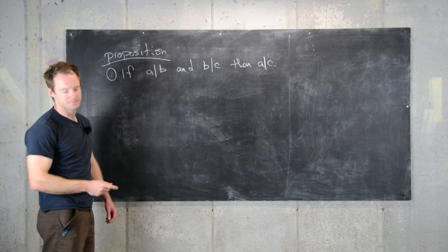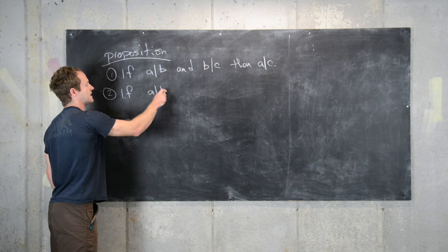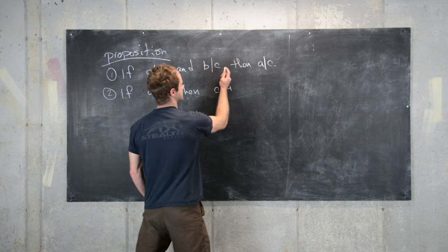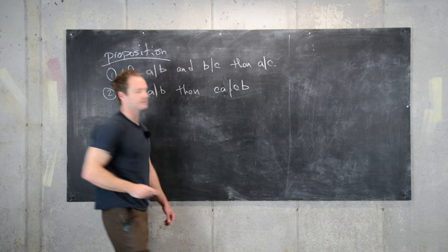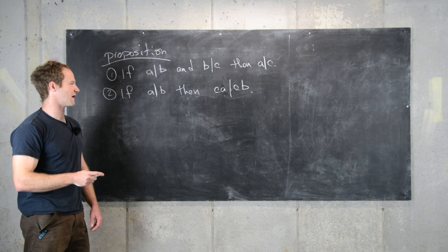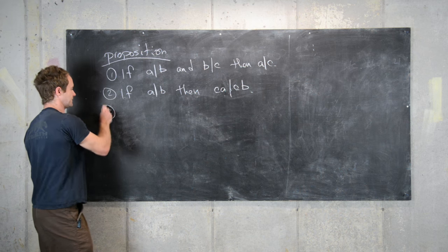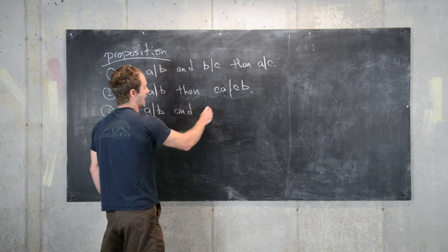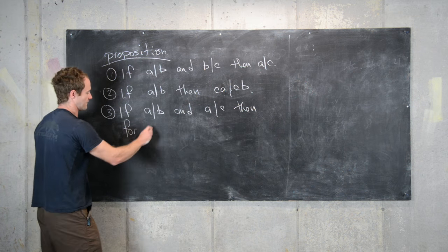The next one is if a divides B then C times a divides C times B. Obviously I'm leaving off some slight hypotheses about these numbers a, B and C but it's easy to fill in those details. And then lastly, if a divides B and a divides C then for all integers X and Y